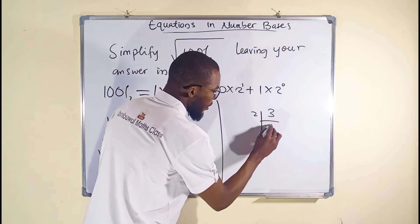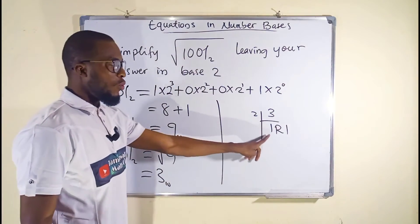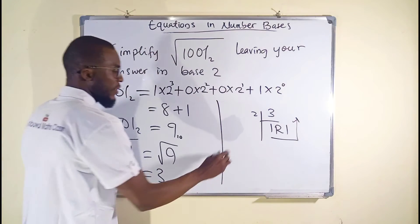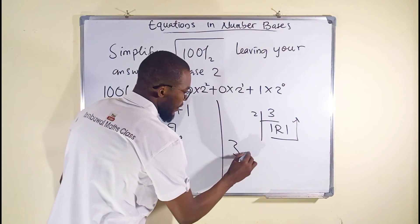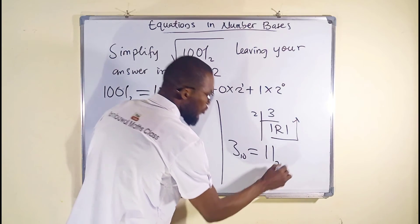2 can go into 3 in base 10. So 2 can go into 3 in base 10 is equal to 1, 1 in base 2, which is our answer.